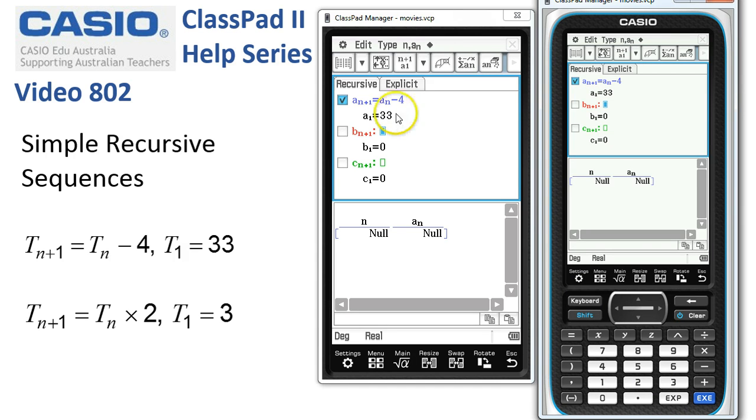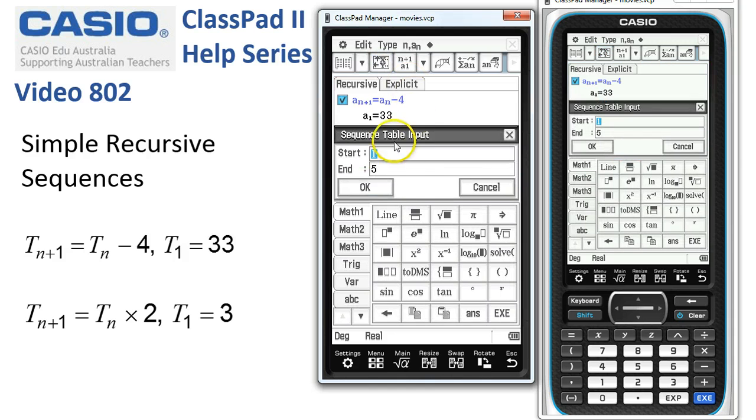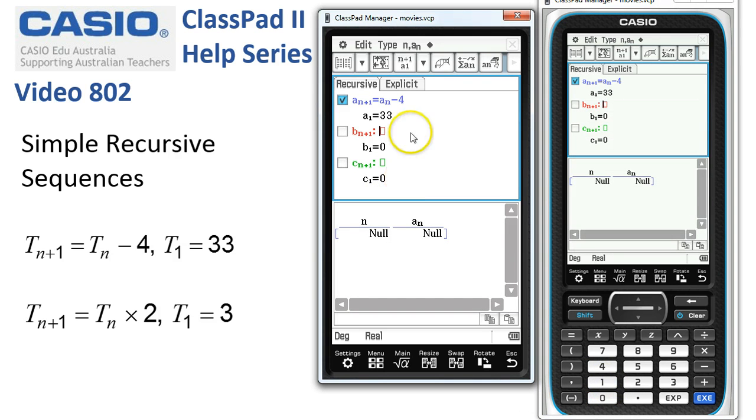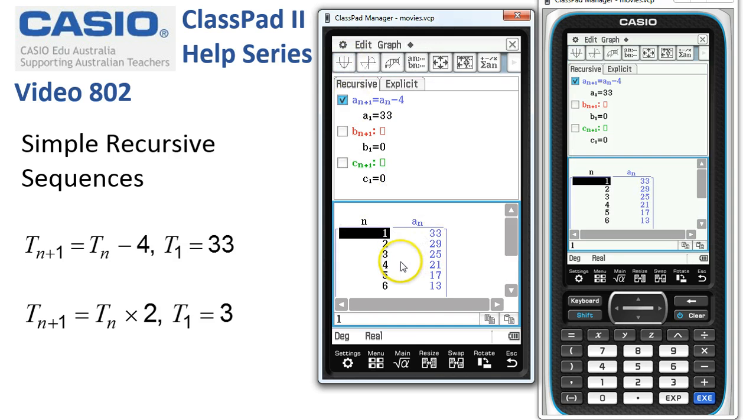Now if we want the first ten terms of this sequence we need to set the table range from here. So it's starting at one and we're going to end on the tenth. So we'll enter the ten for the last one. Tap OK and our last job is to tap onto this little icon and here's the sequence.